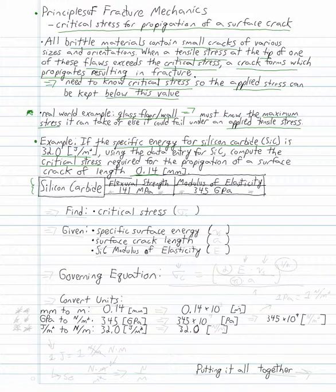Here we have our data entry for the silicon carbide. We're given the flexural strength of 141 megapascals, and we're given the modulus of elasticity for this material as 345 gigapascals.